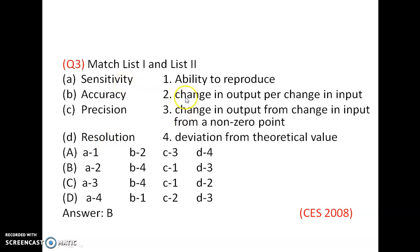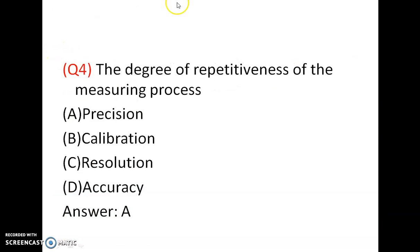For sensitivity — change in output per change in input — even a very small input can be measured by a sensitive instrument; that is called sensitivity. The degree of repetitiveness of the measuring process is precision: the instrument will provide the same result again and again.